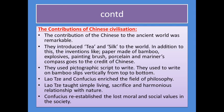Let me tell you about the contributions of Chinese civilization. Chinese civilization flourished remarkably in the ancient world. They introduced tea and silk to the world. In addition, their inventions include paper made of bamboo, explosives, painting brushes, porcelain and the mariner's compass. They used pictographic script to write, writing on bamboo slips vertically from top to bottom. Laotis and Confucius enriched the field of philosophy. Laotis taught simple living, sacrifice and harmonious relationship with nature.